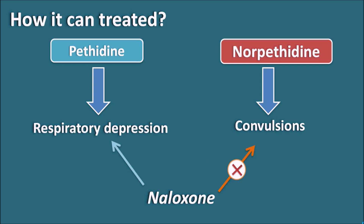When Pethidine is given to control pain during labor, it may cross the placental barrier and reach the fetus. After delivery, Pethidine levels may accumulate within the neonate and be converted into Nor-Pethidine. As the neonate does not have a fully developed excretory mechanism, these accumulate and produce respiratory depression and convulsions. The respiratory depression can be antagonized by Naloxone but convulsions produced by Nor-Pethidine cannot. That is the mechanism of Pethidine-induced respiratory depression and Nor-Pethidine-induced convulsions in neonates.